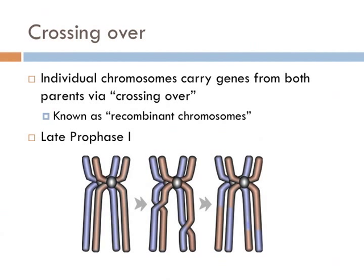Crossing over occurs, and the chromosomes that result have a mixture of alleles from both parents. These are known as recombinant chromosomes — chromosomes that have been recombined from two different lineages, one from the mom and one from the dad.